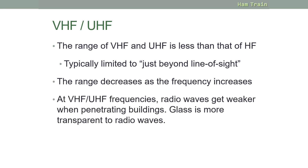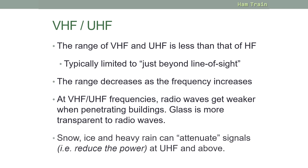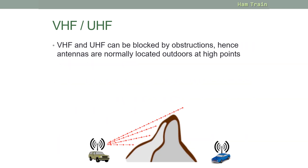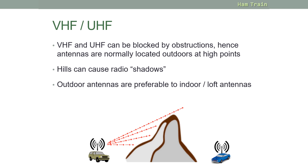At VHF and UHF frequencies, radio waves get weaker when penetrating a building. Glass is more transparent to radio waves — hence you'll typically go towards a window to get a better signal from your UHF mobile phone. Snow, ice, and heavy rain can attenuate signals, meaning power is reduced, especially at UHF and above. VHF and UHF can be blocked by obstructions, so antennas are normally located outdoors at high points. Hills can cause radio shadows — the blue car pictured here is in the shadow of a hill. Outdoor antennas are generally preferable to indoor or loft antennas.